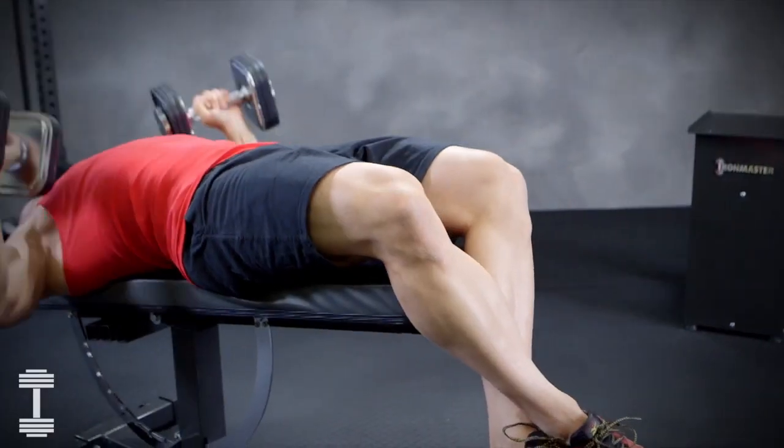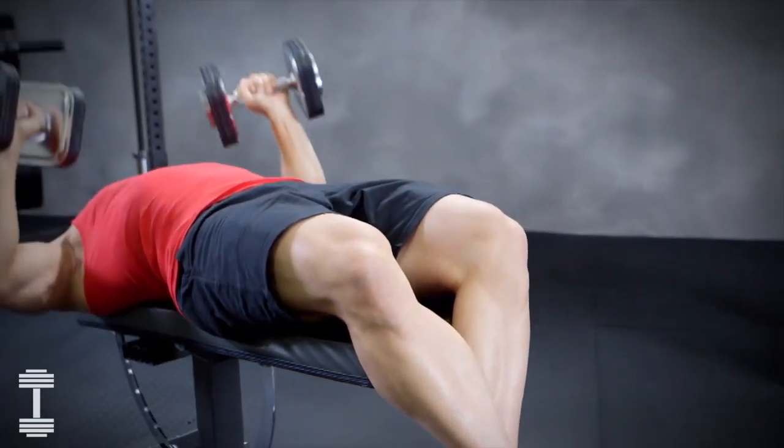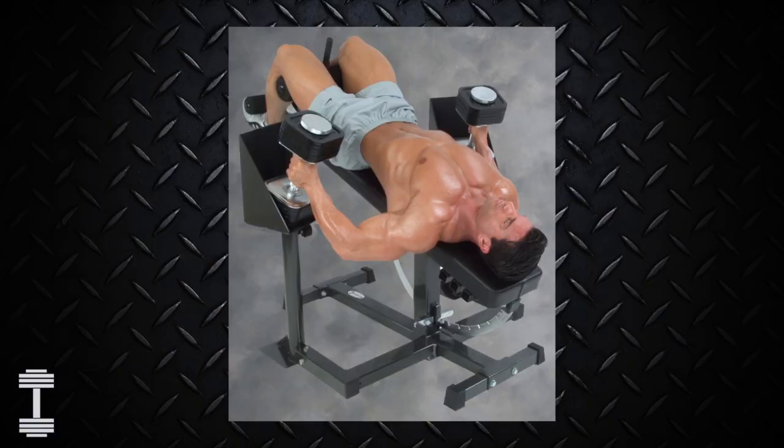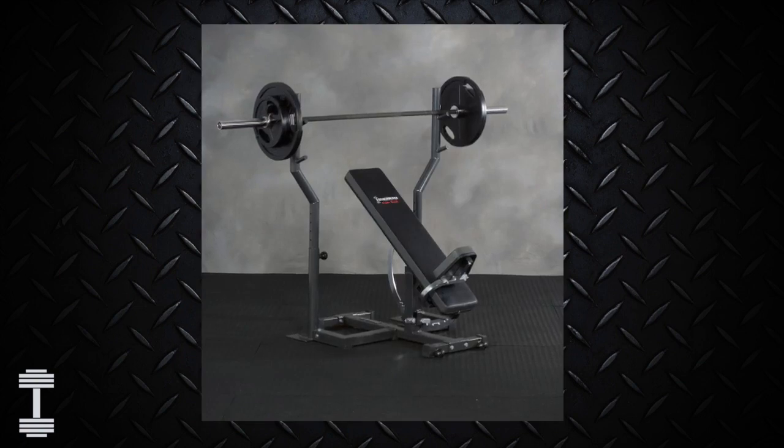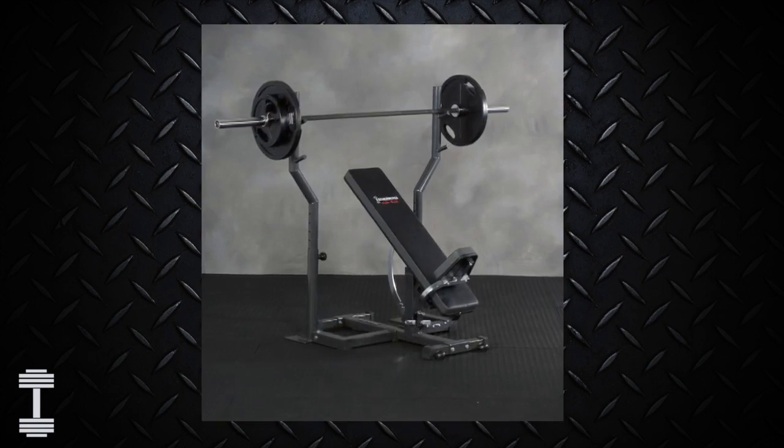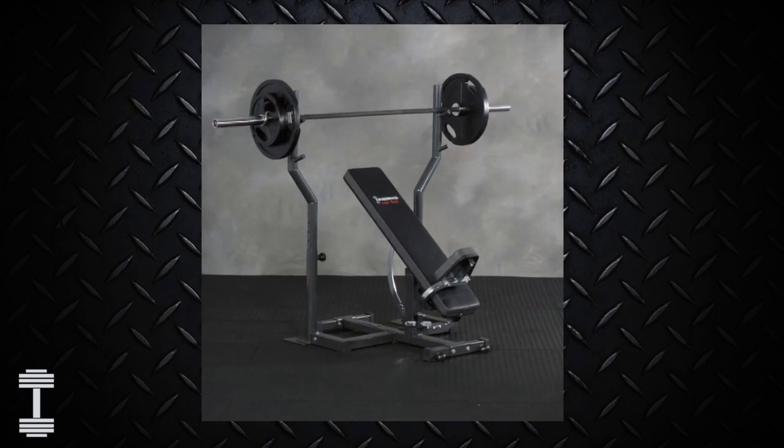You can still do declines without the attachment at lower bench angles. The dumbbell spotting stand is another option that makes heavy dumbbell training much safer. It can also be set up with the barbell adapters to make the super bench a full Olympic bench. For more information visit ironmaster.com.